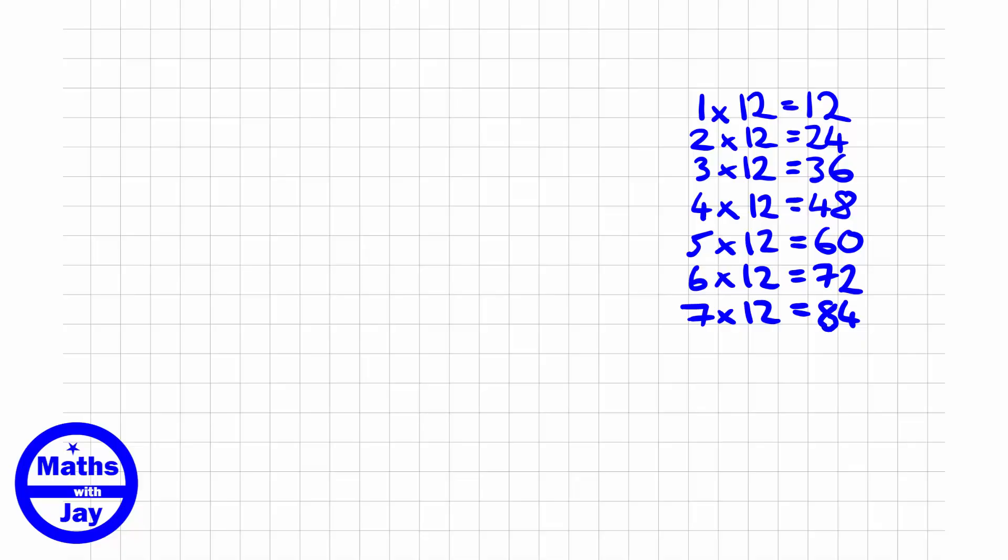And 8 times 12, we could add on 12 or we could double 4 times 12. It's a good idea to just check. So I'm here checking that 84 plus 12 is 96, and also 2 times 48 is going to give us 96. It helps check we're getting the right answers.